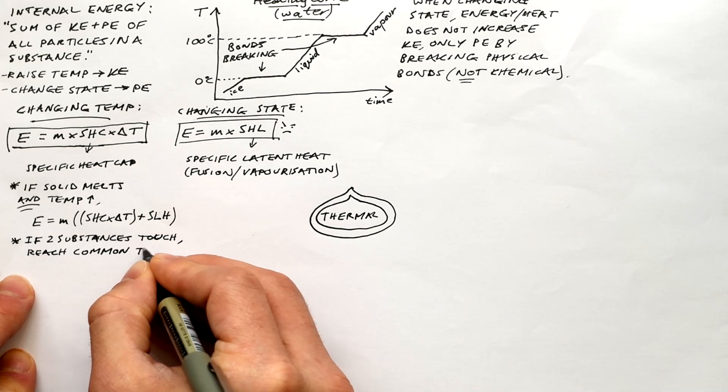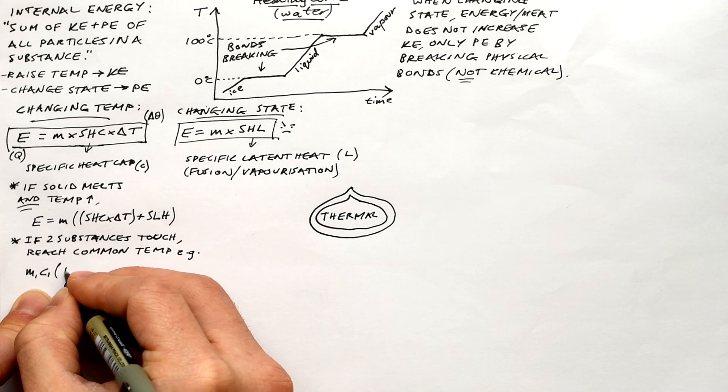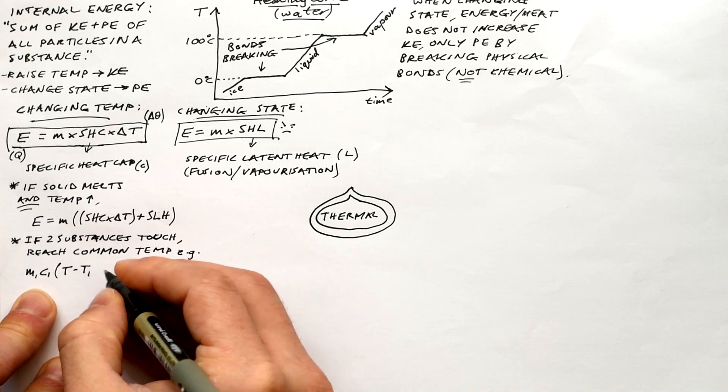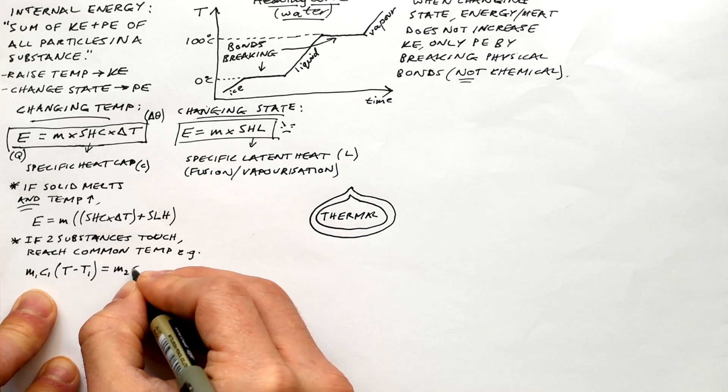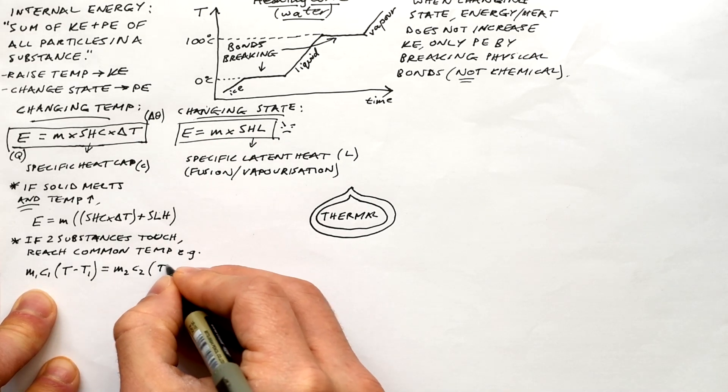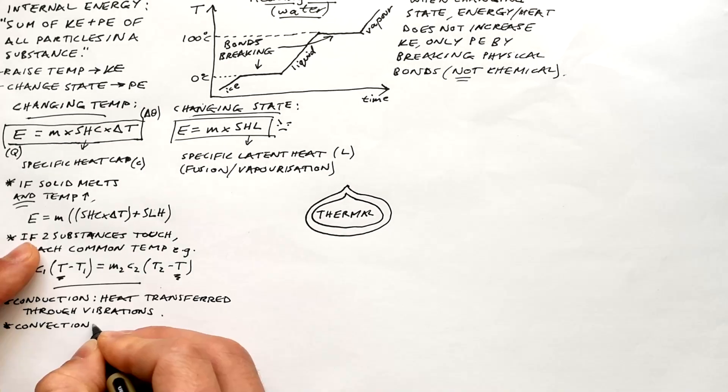And this is just for A level. If two substances come into contact with each other, eventually they will end up at a common temperature. So if you have a question on this, all you have to do is equate those two energies, MC delta T. It might be melting as well, but not in this case that I've written down. And delta T is going to be the common temperature, take away the starting temperature or vice versa.